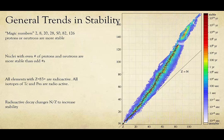There also happen to be several rules that the universe seems to have set up. You won't have to memorize these, but it is worth noting them. We have magic numbers: 2, 8, 20, 28, 50, 82, and 126 protons or neutrons happen to be more stable. Nuclei with an even number of protons or neutrons are more stable than ones with odd numbers. All elements with Z equals 83 or higher are radioactive, and all isotopes of Tc and Pm are radioactive.